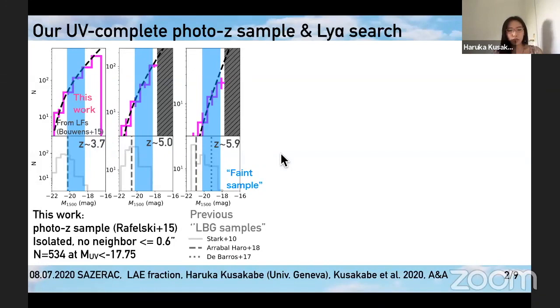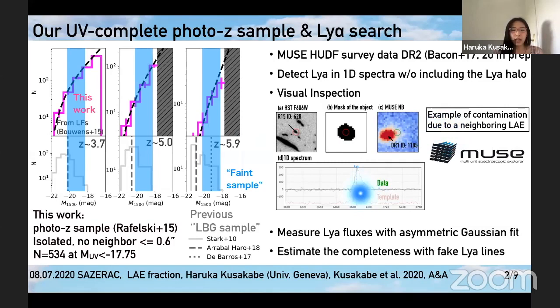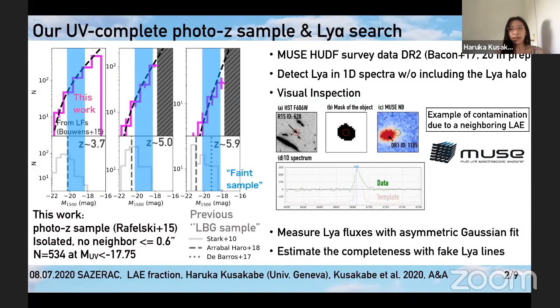The LA fraction has been well investigated already, but this is the first work with a UV complete sample. We used MUSE HUDF ultra-deep survey data and detected Lyman-alpha emission in 1D spectra without including halo emission. We inspected all detected sources visually. Here is an example of a contaminated detection — although we can clearly see Lyman-alpha in 1D spectra, it is due to a neighboring Lyman-alpha emitter as shown by the narrowband MUSE and HST images. Thanks to the MUSE IFU data, we now have a homogeneous Lyman-alpha sample by excluding this contamination.